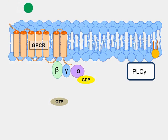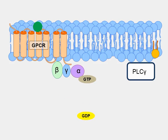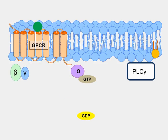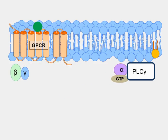A ligand comes in and binds to the G-protein coupled receptor, activating it by forcing the exchange of GDP for GTP at the alpha subunit of the G-protein. The alpha subunit then goes and associates with phospholipase C-gamma, activating it.